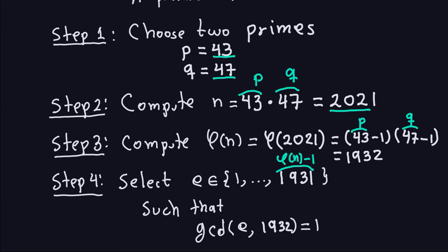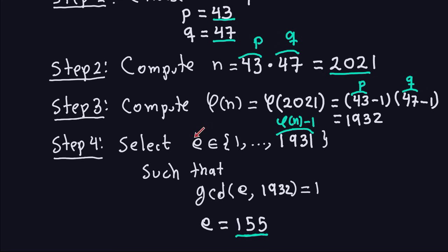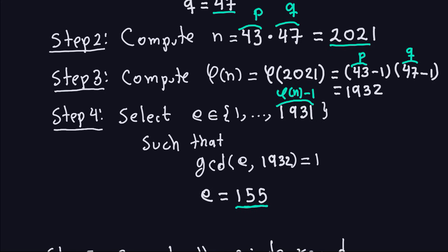This setup is exactly the same as RSA key generation. Next, we select the public exponent E, which is any number from 1 to phi(n)−1, so any number up to 1931, such that gcd(E, phi(n)) = 1 — meaning E shares no common factors with 1932. We can choose, for example, E = 155.